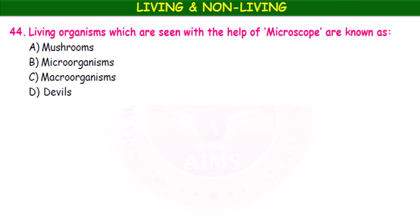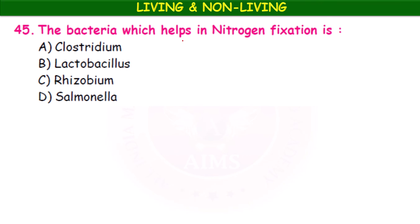The living organisms that are seen with the help of a microscope are known as microorganisms. We need an electron microscope to see ultra-microscopic organisms. The bacteria which helps in nitrogen fixation is Rhizobium. It is present in the root nodules of groundnut and helps in nitrogen fixation.